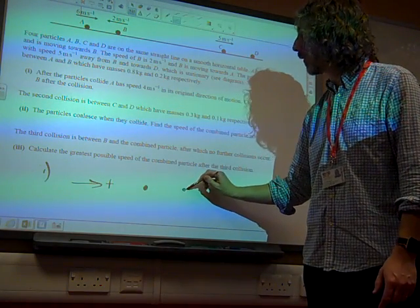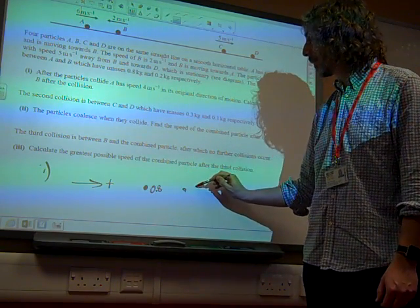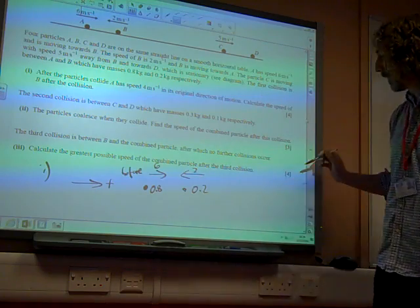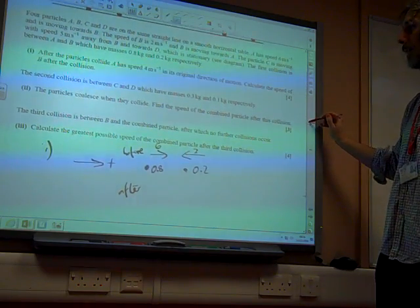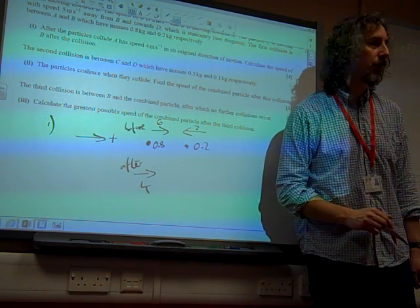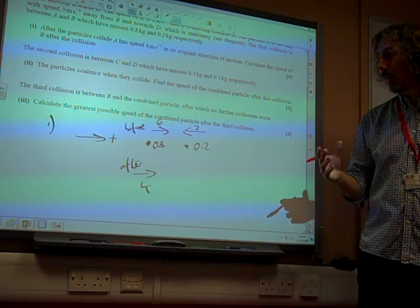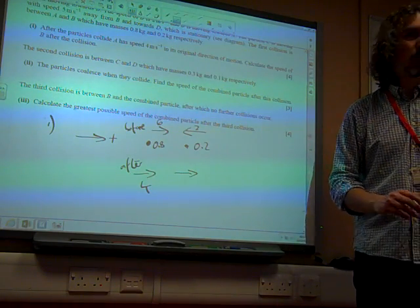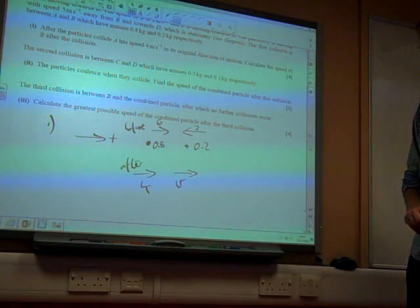We've got particle A with mass 0.8 and B with mass 0.2. Before, we've got A with six in that direction and B with two meters per second in that direction. Afterwards, we are told that particle A has speed four in its original direction. Just a little bit of logic and thinking tells us that the direction of B has to be that direction, because otherwise it would have bounced over A and that's not going to have happened. There is our final velocity of B.